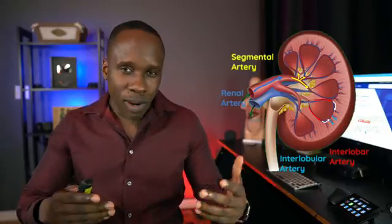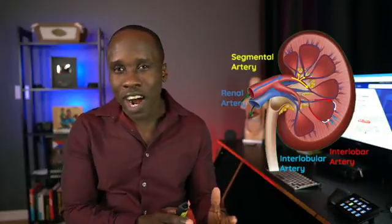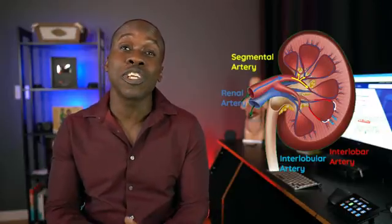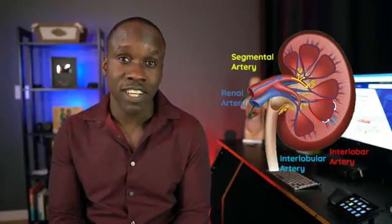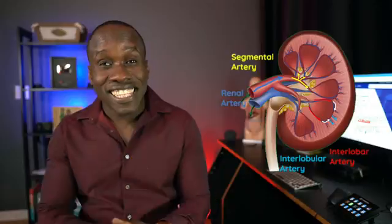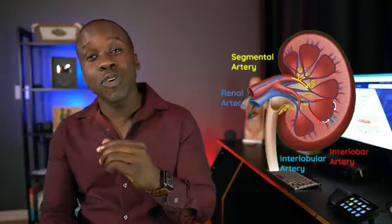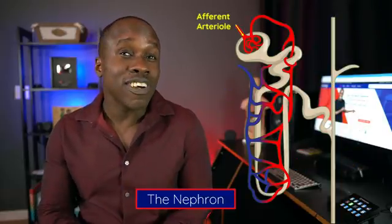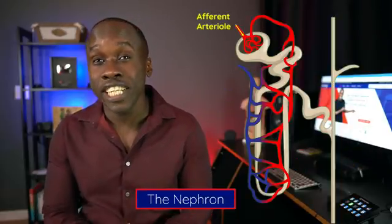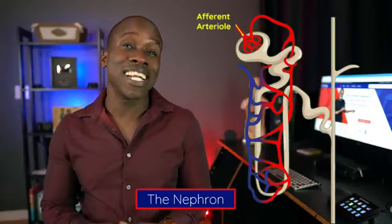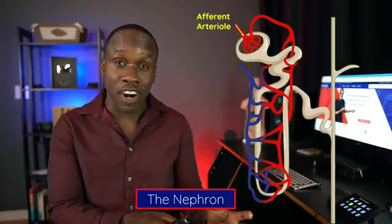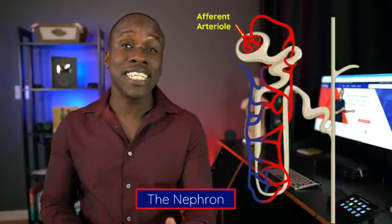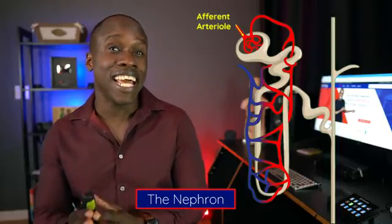I know this is a lot of terms to learn, but I want you to understand the sequence and how the blood is going to get to the different parts of the kidneys — and more so to the functional unit of the kidneys, which are the nephrons. Off of those interlobular arteries, we send off these little tiny branches called the afferent arterioles. This is really how the blood is getting into these nephrons. The nephrons are the functional units of the kidneys; we'll get into more detail about them in the next video.